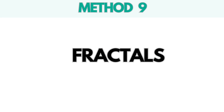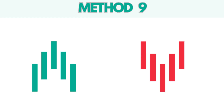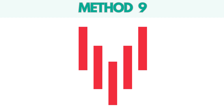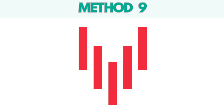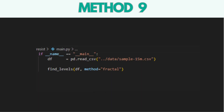Lastly, we have a method that utilizes fractals. A fractal is a candlestick pattern formed by five candles. The third candle in the pattern has the lowest low price, while the previous candles exhibit decreasing lows and the subsequent candles show increasing lows. To obtain results using the fractal method, you can set the method parameter to Fractal in the FindLevels function.